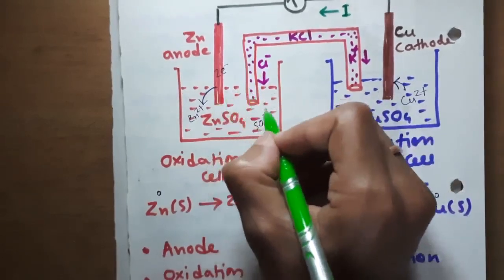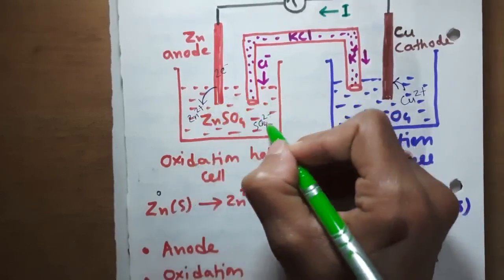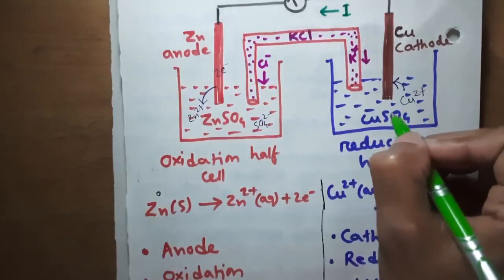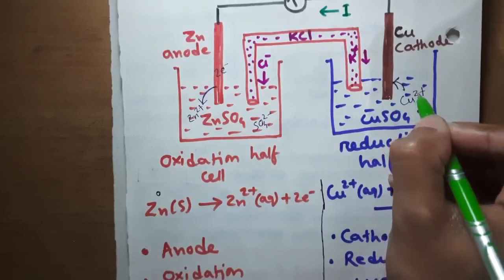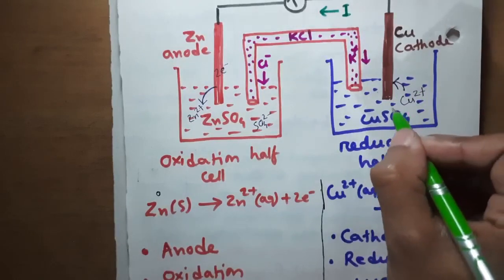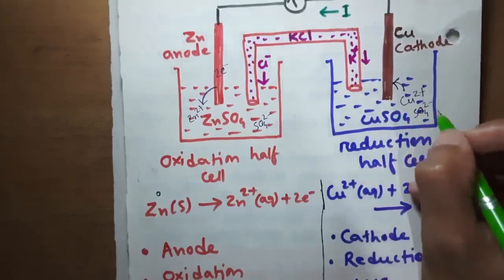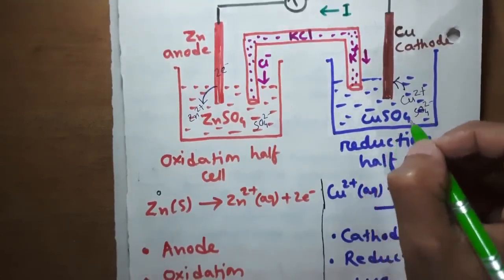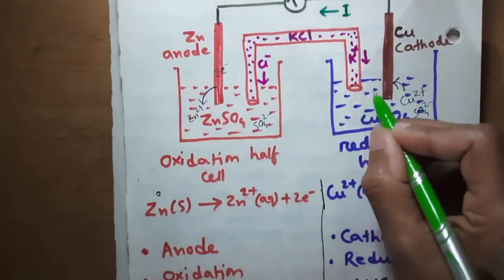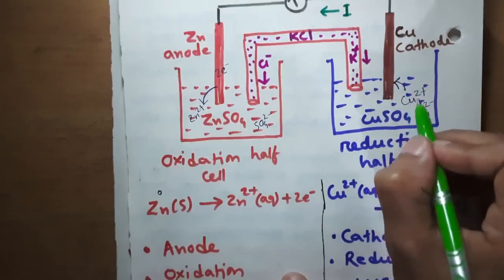To keep each solution electrically neutral, with balanced positive and negative ions, we need to use the salt bridge. In the copper sulfate solution, the concentration of copper 2 plus ions decreases, while the relative concentration of sulfate 2 negative ions increases. So to neutralize this, we use the salt bridge.